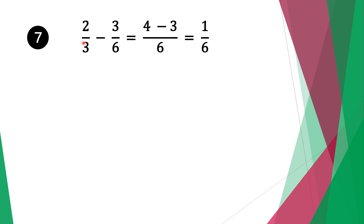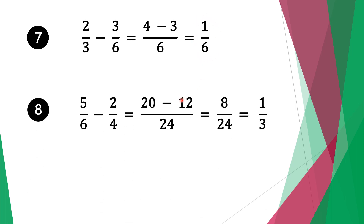Move along the minus sign. Do the same for the second fraction: six divided by six is one, one times three is three. Four minus three is one. Move along the six as it is, so our solution is one over six.